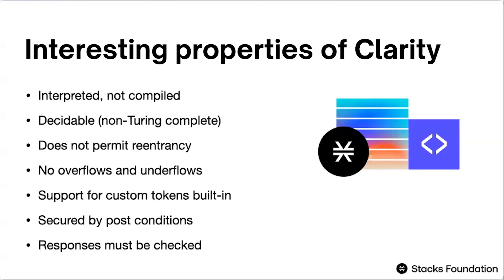Another feature of decidability is that we can know for certain that the program is going to halt — it's going to stop its execution. This is known as the halting problem in computer science. A Turing complete language might never halt, and we cannot know for sure until we actually execute the program. Since Clarity is decidable, we know that at some point it's going to end. On a blockchain, imagine if you could build a contract whose execution never ends — that could stall the blockchain, which is not a good property.